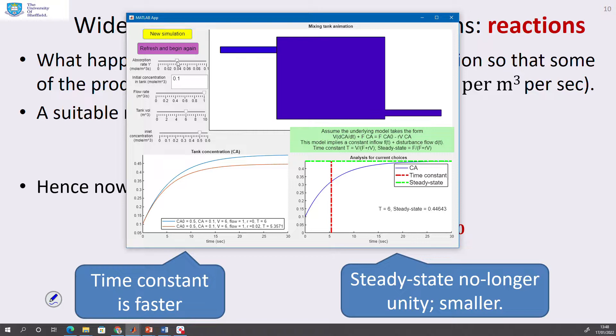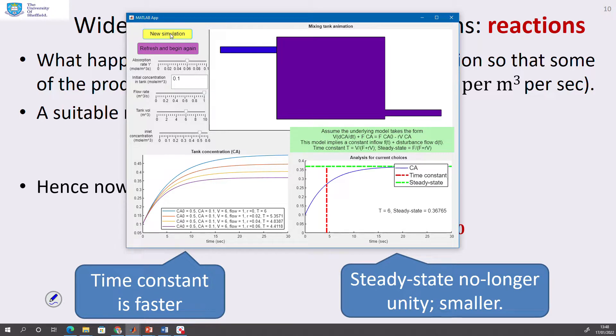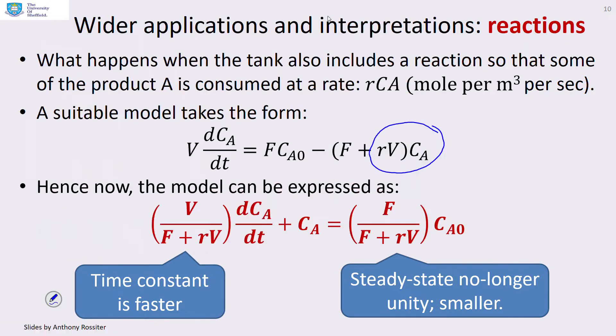Let's make the absorption rate bigger again and run another simulation. What can you see? The steady state is smaller, the time constant is faster. Let's increase R some more from the simulation. And what do you see? The steady state is smaller and the time constant is faster. So let's move that out of the way and carry on.